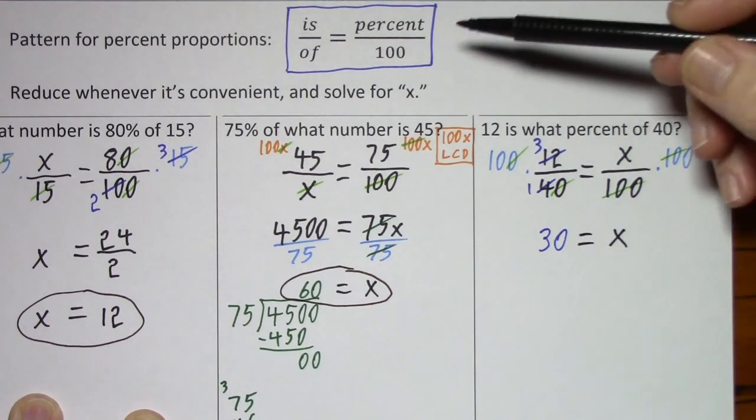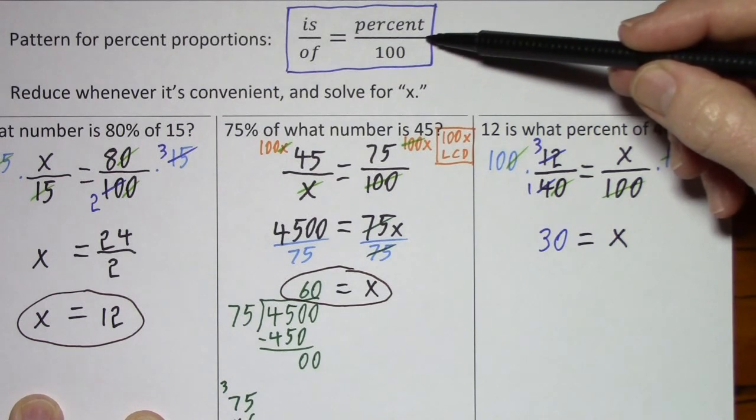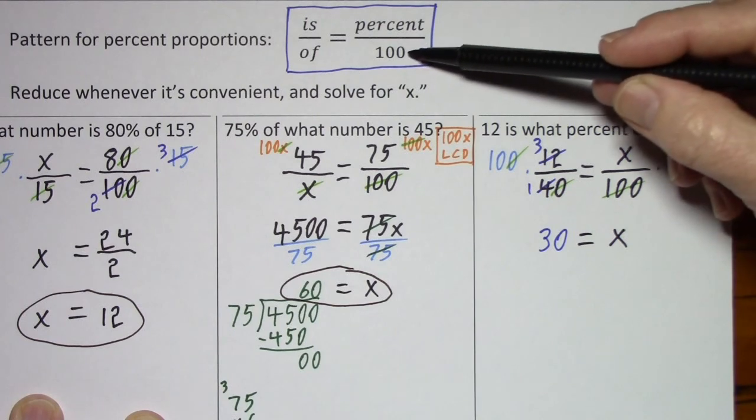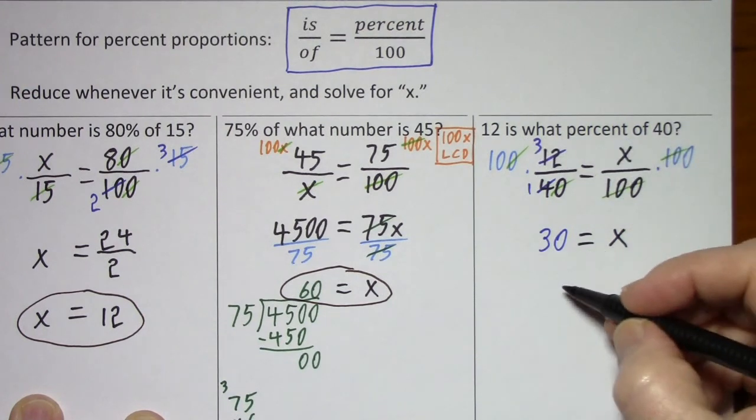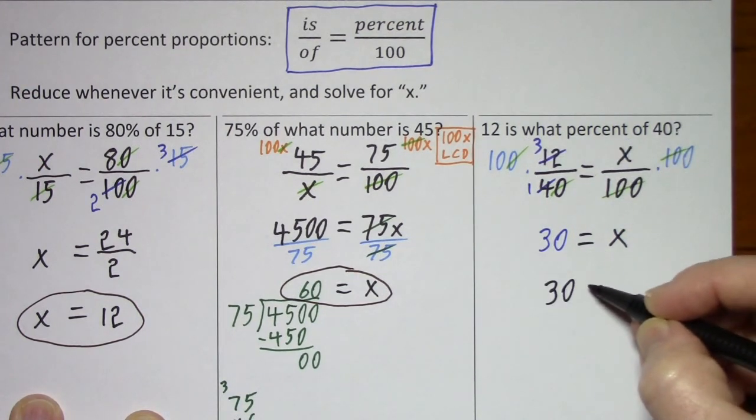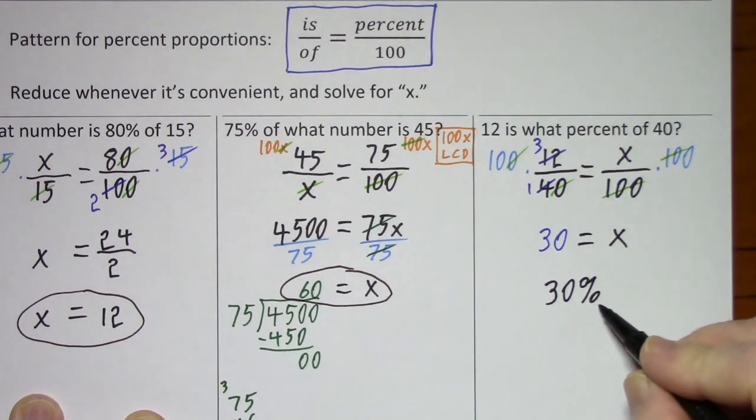But when you set up proportions, you take care of the placement of the decimal by saying divided by 100, as we did here, divided by 100. If it says what percent, you simply put in the percent sign, without moving the decimal.